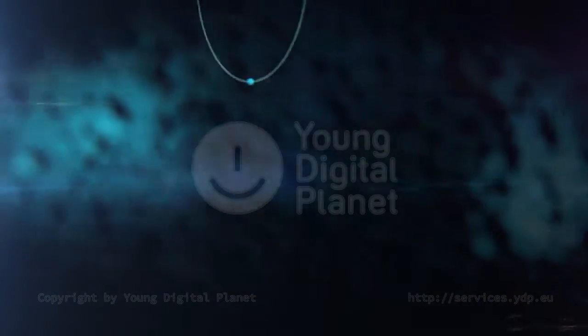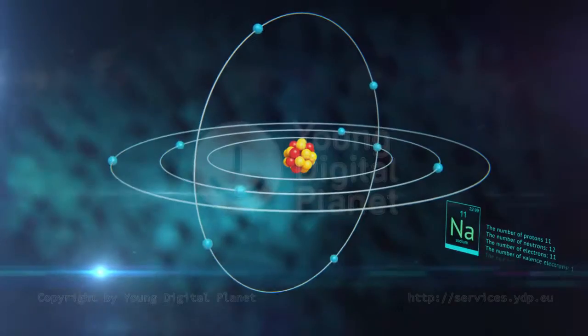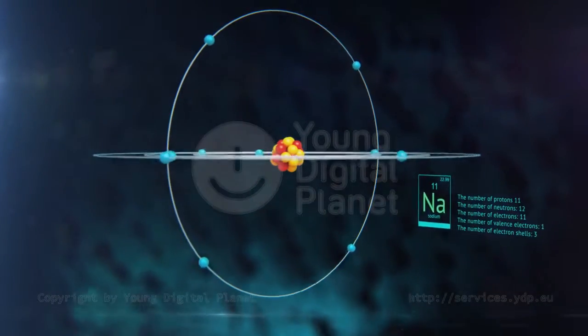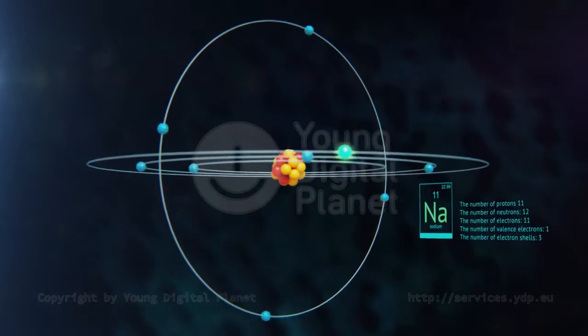The sodium nucleus is composed of eleven protons and twelve neutrons. There are three electron shells with eleven electrons, and one of them is a valence electron.